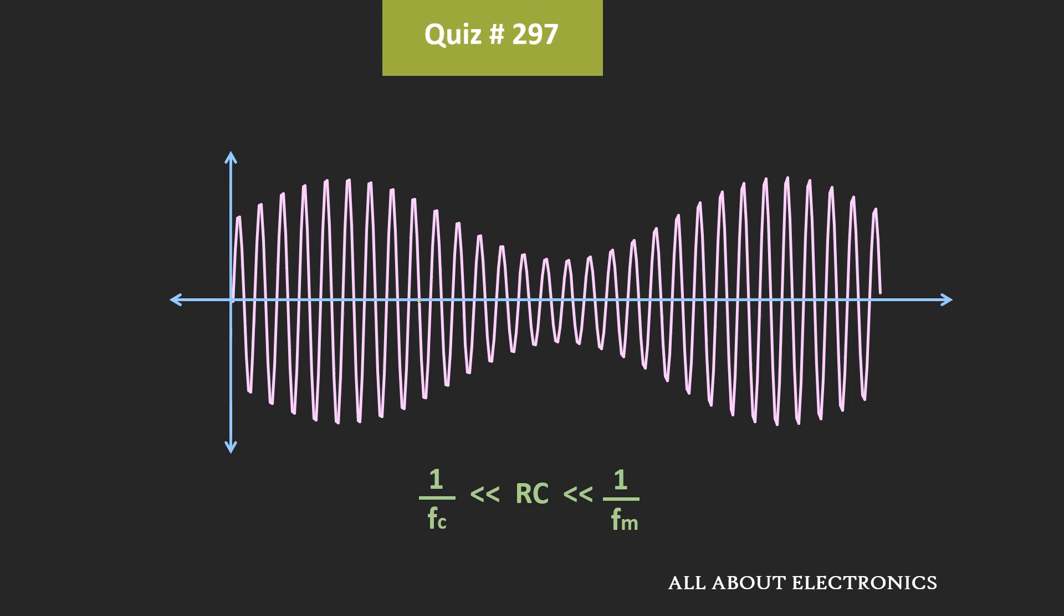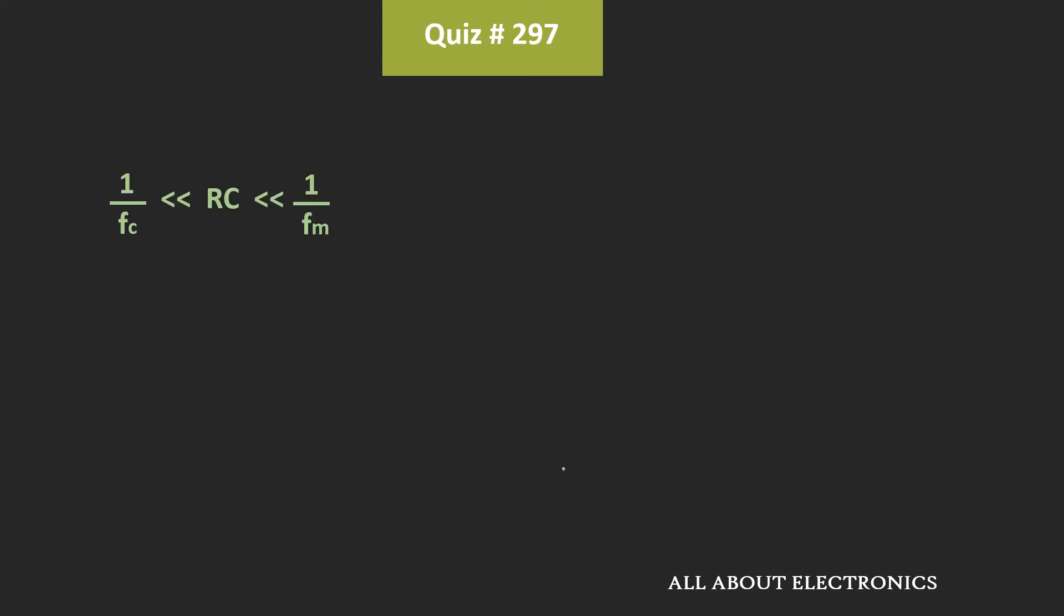That means the RC time constant should follow this condition. So here, this 1 over fc is equal to 0.5 microsecond. Similarly, this 1 over fm, that is the 1 over maximum frequency of the message signal, is equal to 0.66 ms.